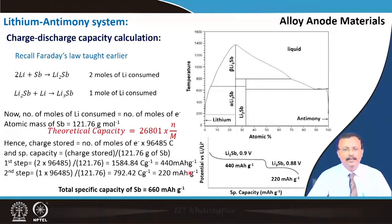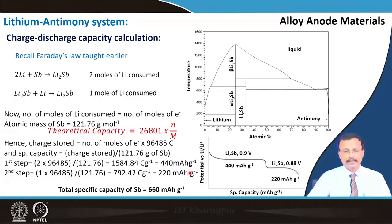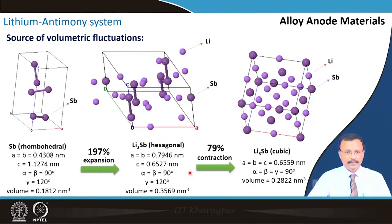There is a shortcut formula based on Faraday's law: theoretical capacity equals a constant multiplied by the number of moles of electrons exchanged divided by the molecular weight of the relevant material. If you practice this, calculating theoretical capacity and identifying the voltage profile is straightforward.